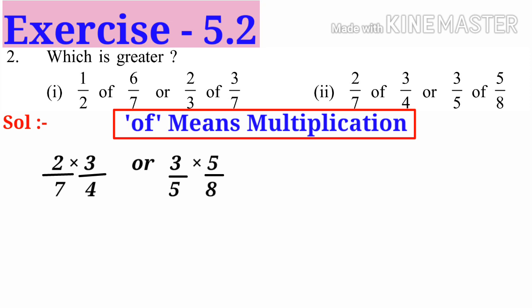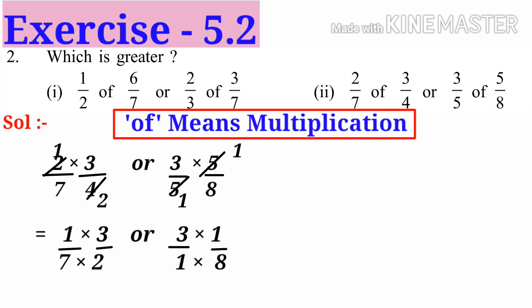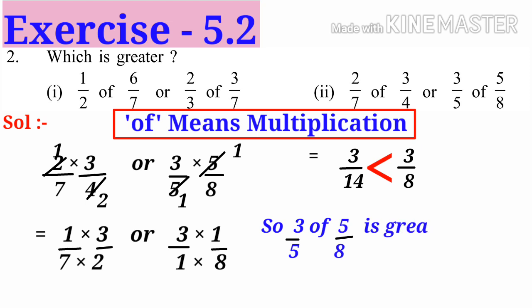Now put '×' in place of 'half': 2/7 × 3/4 or 3/5 × 5/8. On simplification, divide left side by 2 and right side by 5. We get 1×3 / 7×2 or 3×1 / 1×8, that is 3/14 or 3/8. Observe that the numerators are equal, so the lesser denominator gives the greater fraction. Therefore 3/5 of 5/8 is greater.